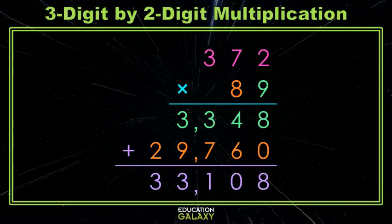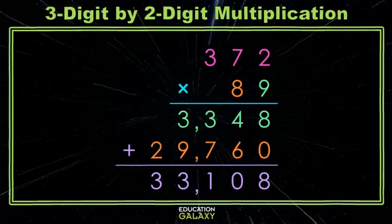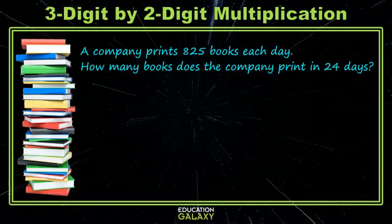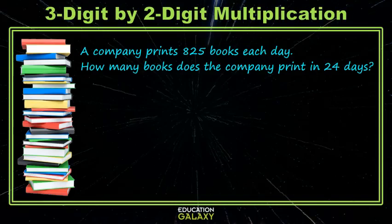Okay, let's see if we can apply this to a real world example. Here we have a company printing 825 books each day, and we want to know how many they print in 24 days. So we find this total with multiplication. So 825 times 24.